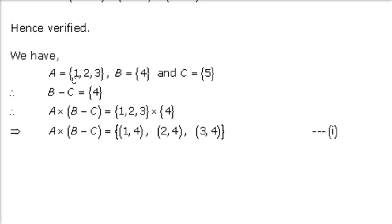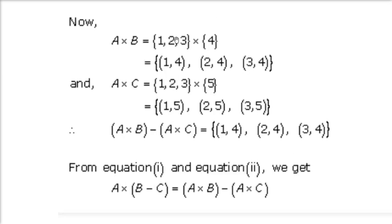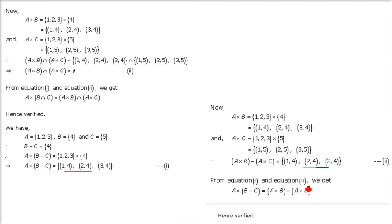Next one is A cross (B minus C). First find B minus C: B is {4} and C is {5}. Taking out from B what is in C — 4 is not in C, so B minus C = {4}. Now A cross (B minus C) = {1,2,3} cross {4} = {(1,4),(2,4),(3,4)}. For the right hand side, (A cross B) minus (A cross C): A cross B = {(1,4),(2,4),(3,4)}, A cross C = {(1,5),(2,5),(3,5)}. Nothing is common between these two, so subtracting gives {(1,4),(2,4),(3,4)}. Comparing, both sides are equal. Hence verified.